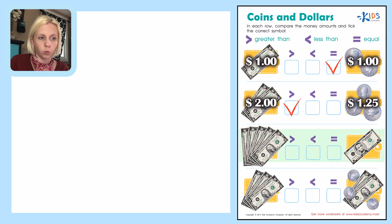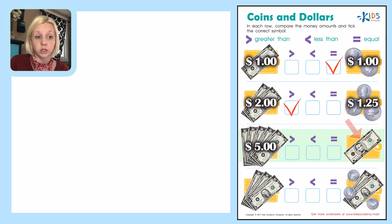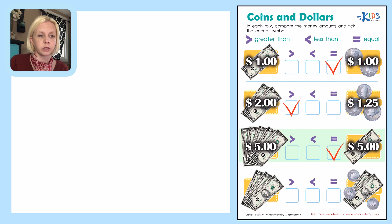Going down to the next one: we count one, two, three, four, five dollar bills — so this equals five dollars. On the other side, that's a five dollar bill, which also equals five dollars. Is one bigger, or are they equal? Five equals five, so we put our check mark next to the equal sign. Great job!